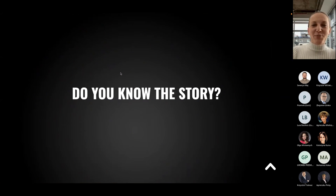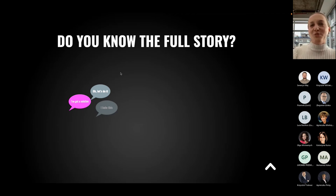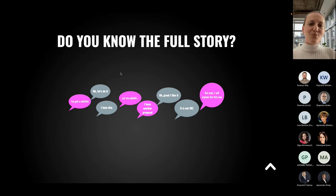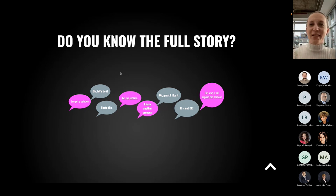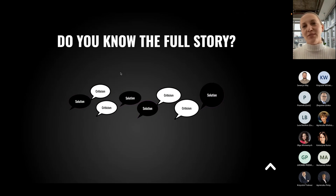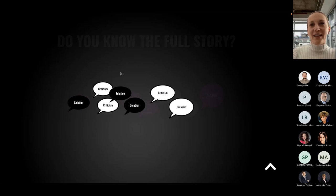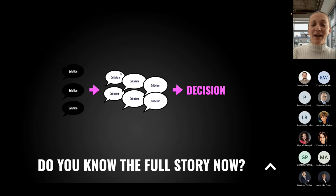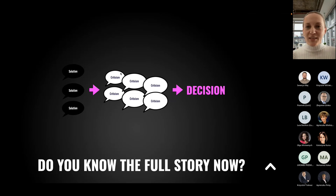But before I show you the design sprint step by step, I would like to ask you a question. Do you know the story when in your company, in your room, with your teammates, you heard or participated in a discussion like: 'I've got a solution! Okay, let's do it. I hate this. Let me explain. I have another proposal.' So generally, a lot of ideas but no constructive decision, because we've got a proposal, a solution, then we criticize, then we get another solution and forget about the first one. That's why the design sprint methodology is the great answer — in this methodology there's a session for presenting all solutions produced during the workshop, a space to criticize and discuss pros and cons of each solution, and then we get a real decision.